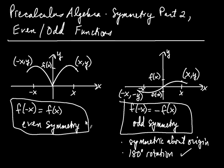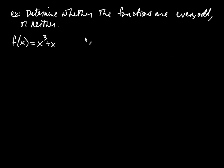Now let's go ahead and verify, as we'll be doing in our class, when a function has even symmetry and when it has odd symmetry. Determine whether the functions are even, odd, or neither. The litmus test is always this: you replace x with negative x and see what you get out. That's always your first step.